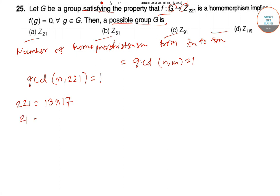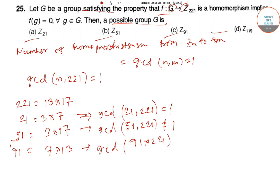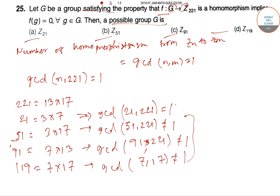For n = 21 = 3×7, gcd(21, 221) = 1. For n = 51 = 3×17, gcd(51, 221) ≠ 1. For n = 91 = 7×13, gcd(91, 221) ≠ 1. For n = 119 = 7×17, gcd(119, 221) ≠ 1. So the only correct option is option A.